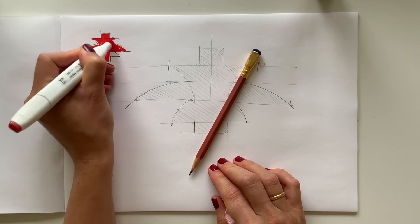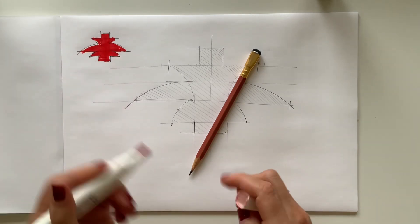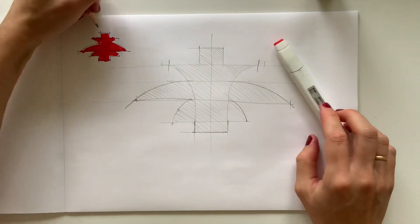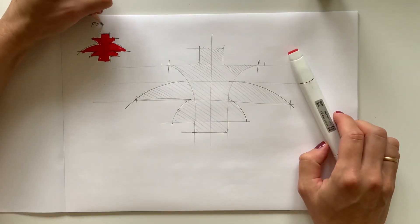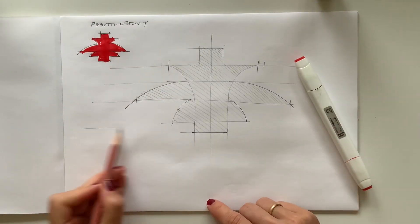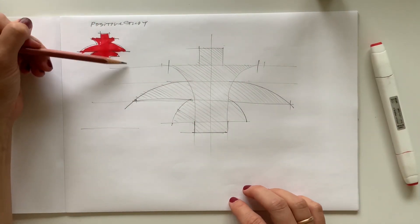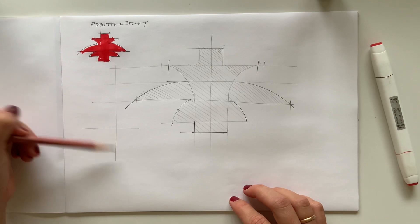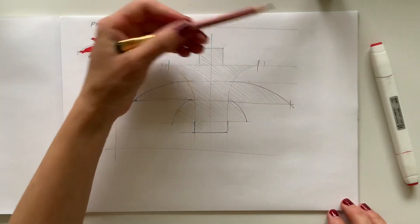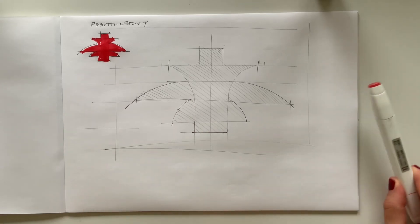Negative study is also very important. Let's call this one positive study. The negative study is the space around this object. So if we would take this lamp and make an imaginary box around it like a square form, and if we would hatch the space, the white space, it would give us the negative study.